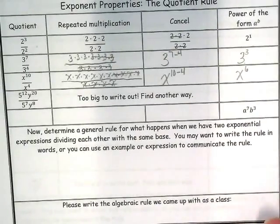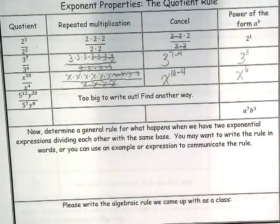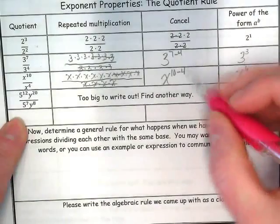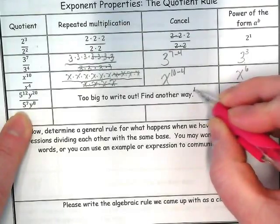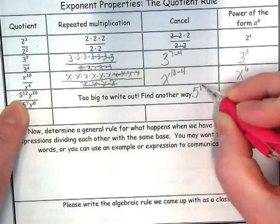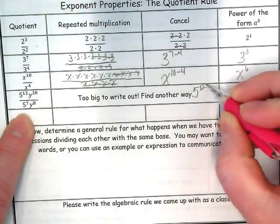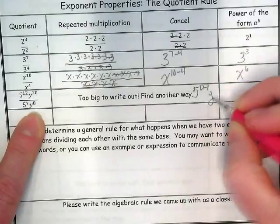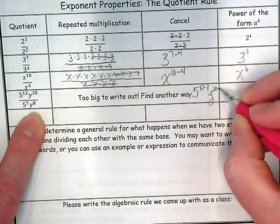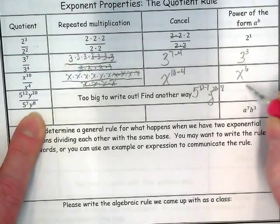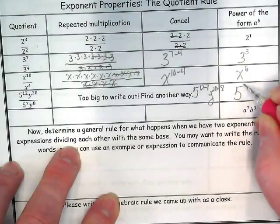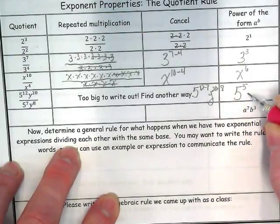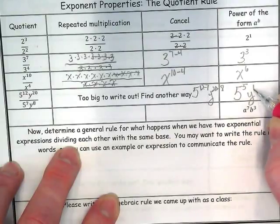So what's another way, since there's just way too much to write for this next one? Well, it is too big to write out - we're gonna take 5 as the base and it has 12 minus what? And then y is the base and is going to have 20 minus what? So we get 5 to the fifth power, and y to the 12th power.